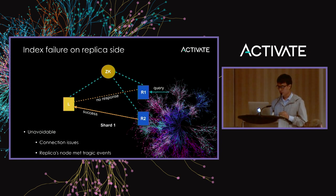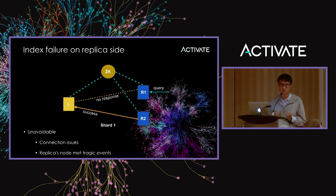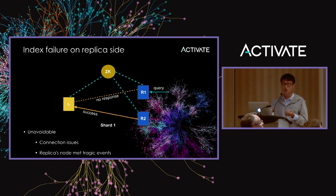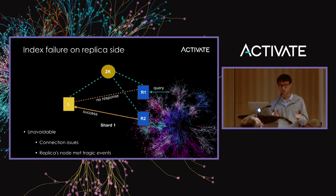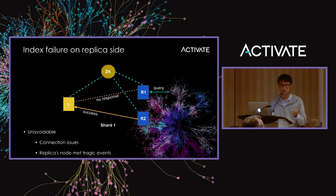We have some mechanism to tell R1 that it is out of sync and needs to start the recovery process so it can catch up with the leader. This kind of failure is unavoidable because something may happen with the physical connection between the leader and replica, or the node containing R1 may experience a tragic event like running out of disk.